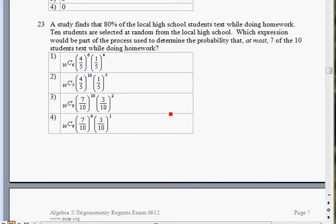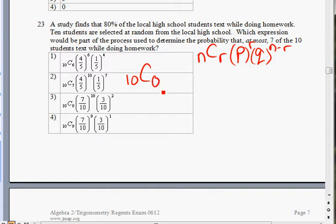To solve this question, it's actually kind of long. There's a lot of work to be shown for this one, but you do need to be familiarized with the formula. We have n combination r, then we have the probability of students texting to the r power, and q, the probability of students not texting to the n minus r power. The way you're going to solve this question is you want to find the probability of exactly, first start with 0 students texting.